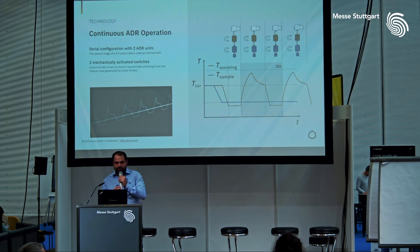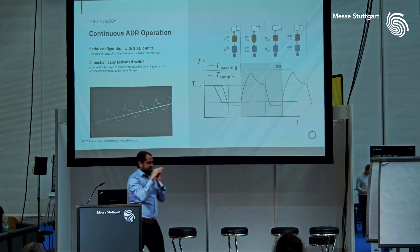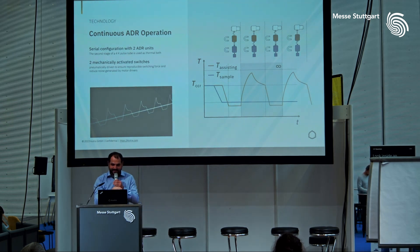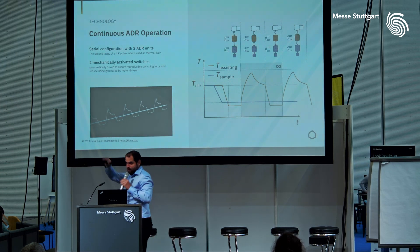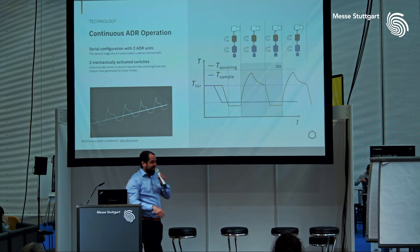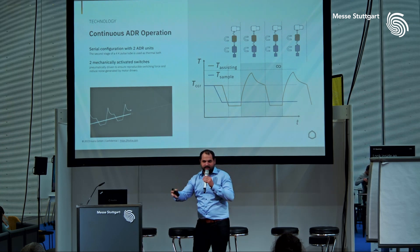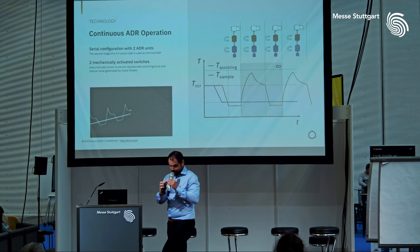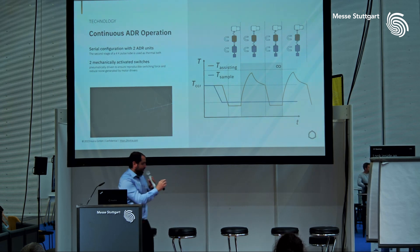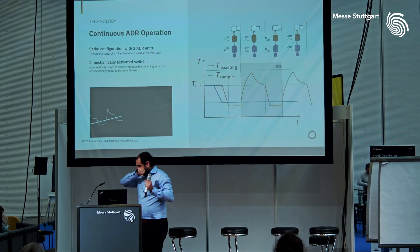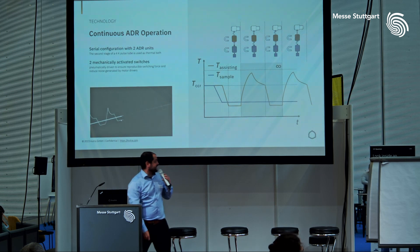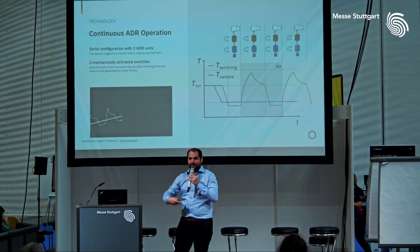The ADR unit close to the sample — shown here in blue — is used to control the sample temperature and allows very precise control. The assisting ADR unit in yellow can be driven to a slightly lower temperature than the sample ADR. At that point, we demagnetize it while magnetizing the sample ADR, so cooling power is transferred to the sample ADR. Once the assisting ADR unit is exhausted, we bring it back to 4 Kelvin by switching the heat switches, and this process can be repeated indefinitely to provide continuous cooling power.